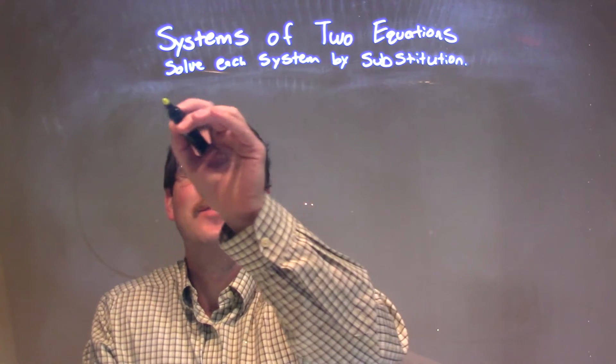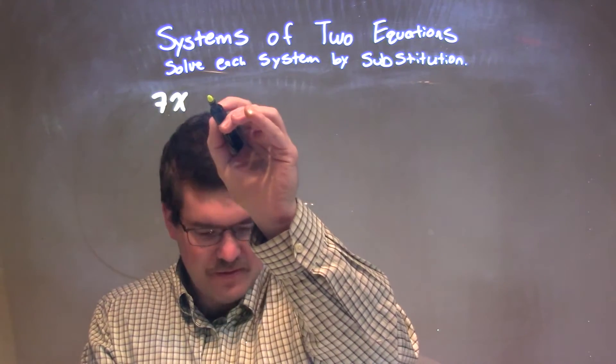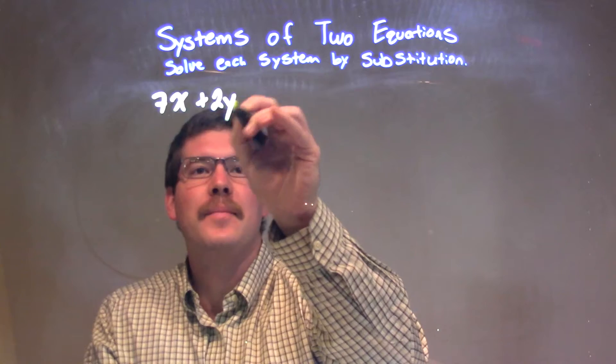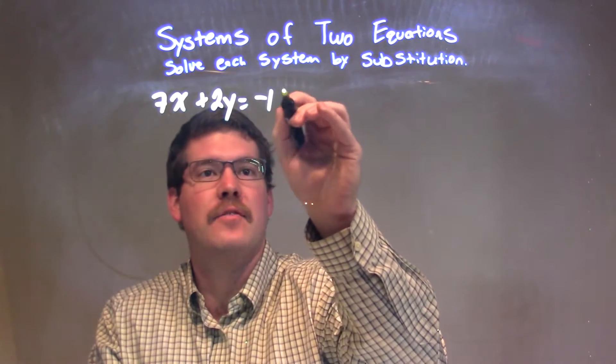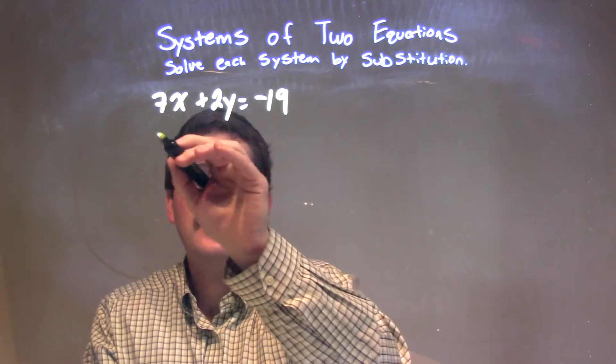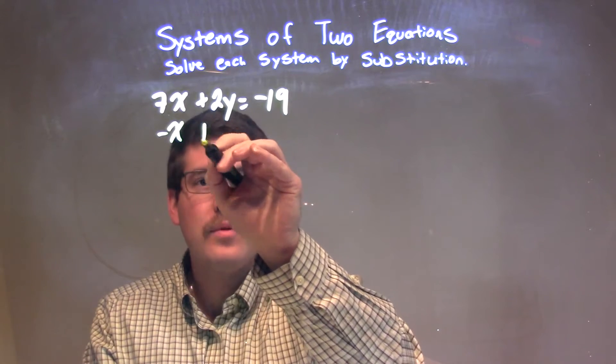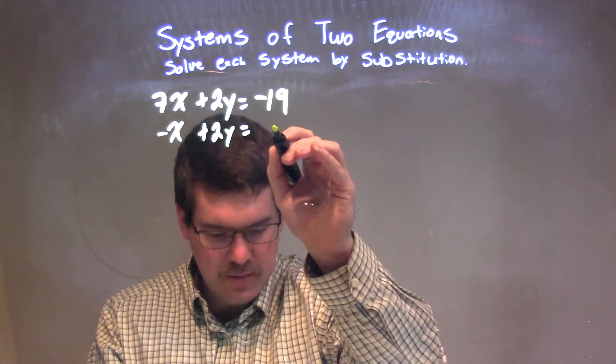I was given these equations, or the system of equations: 7x plus 2y equals negative 19, and negative x plus 2y equals 21.